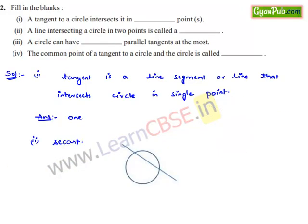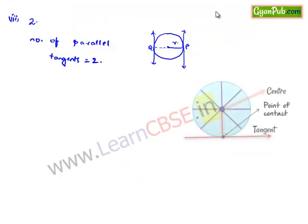Moving on to the fourth blank: the common point of a tangent to a circle and the circle is called the point of contact.